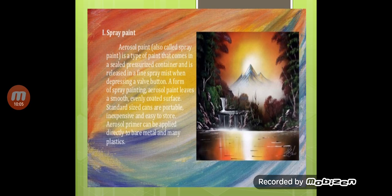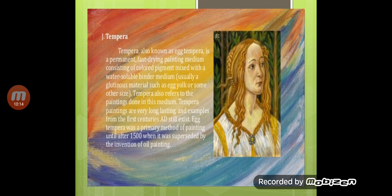Spray paint comes in many kinds of colors and is easy to work with. You can use paper over a negative space and apply color to the positive space using spray. Tempera is also a permanent, fast-drying painting medium consisting of colored pigment mixed with a water-soluble binder medium. Tempera paintings are long-lasting and have been used for a very long time, even before oil painting became widely used.